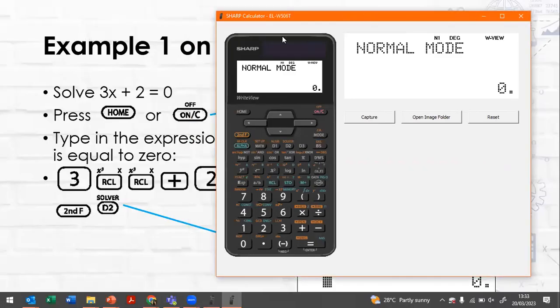Right, so we have 3x plus 2 and what we're going to do is either press the home or the on button to make sure that you are in normal mode. Once you're in normal mode, you can then type in your expression. So you can say 3 and then to make an x you can either say alpha rcl or just press rcl twice, whatever makes you happy, plus 2.